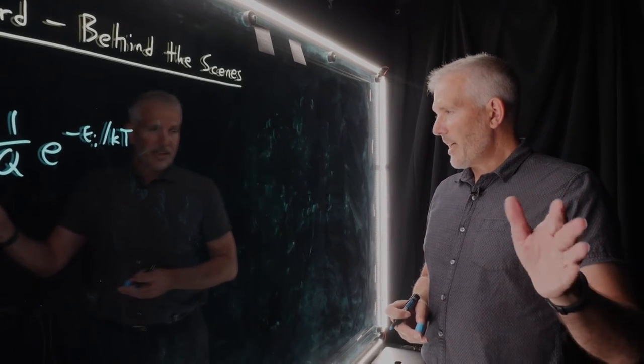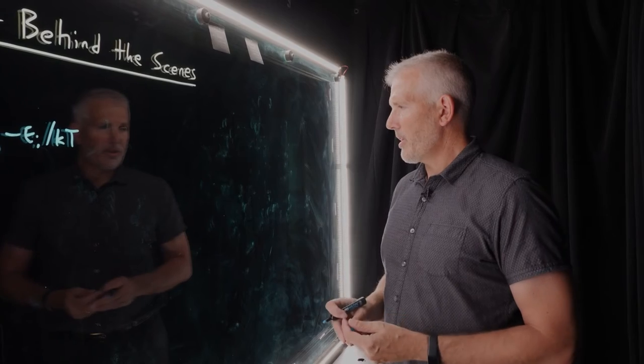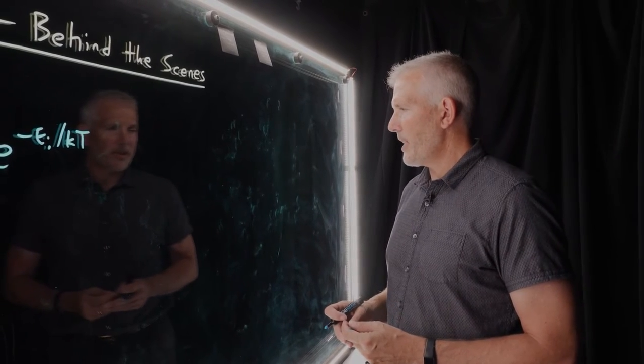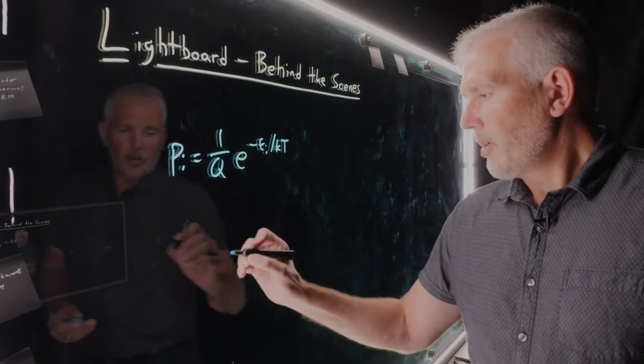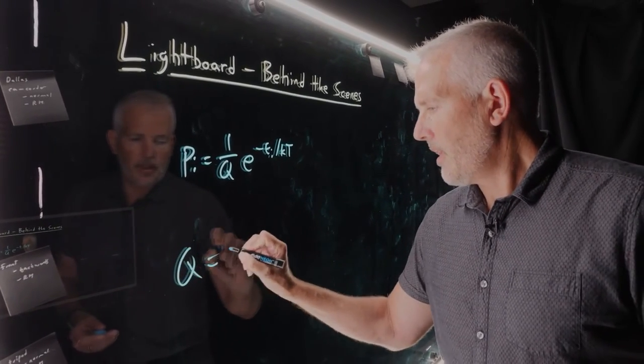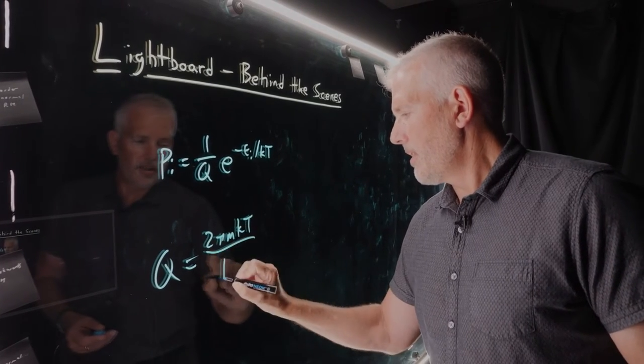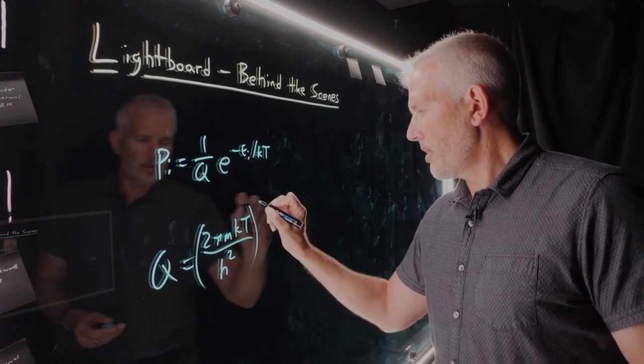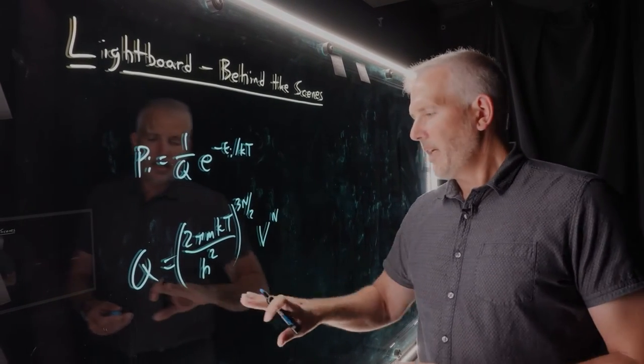So over here is Dallas. Dallas is the videographer that is normally running the cameras and running the computer and doing the edits to make sure these videos look nice and professional. If Dallas watches me write another equation from this side of the board, this equation is going to look just fine, you'll see me writing it with my right hand because I'm right handed and everything is fine.